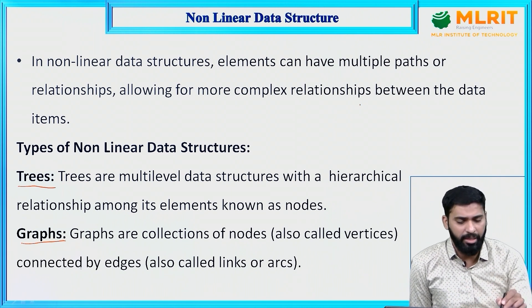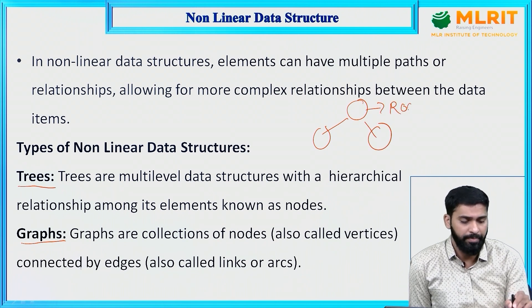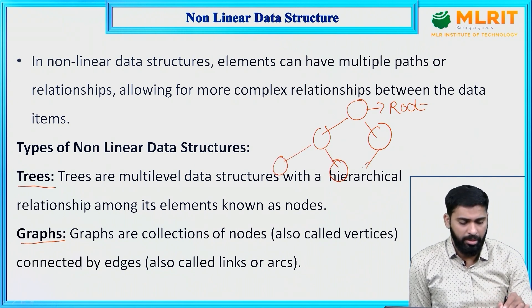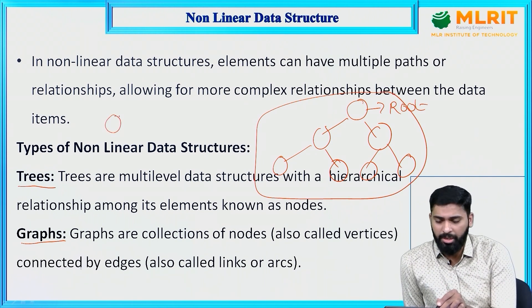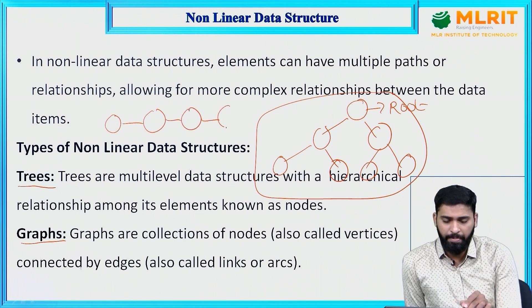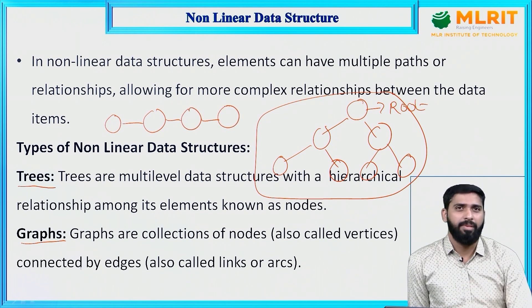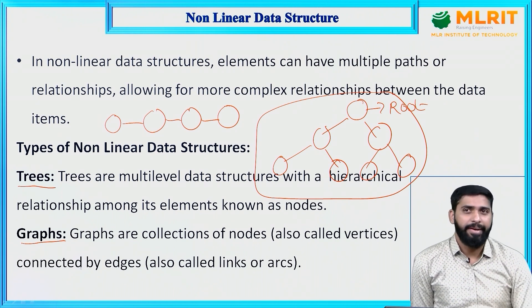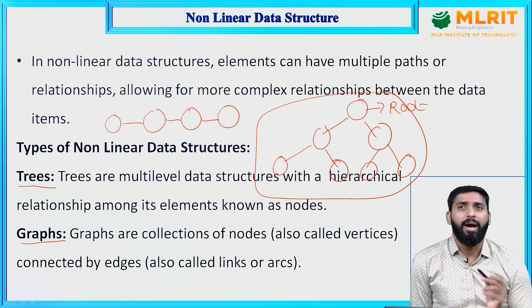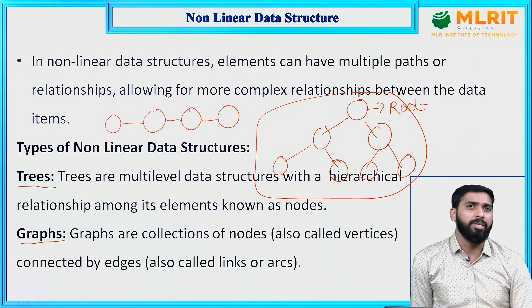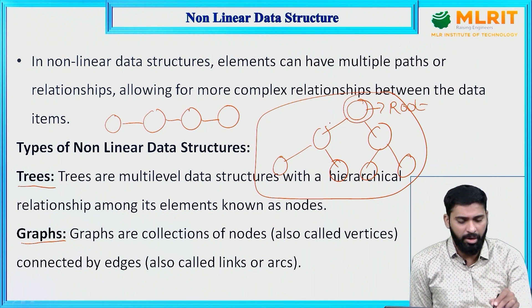What is a tree? A tree is a hierarchical data structure. It has a root node with two children, and again each child can have another two children. Trees are multi-level data structures with a hierarchical relationship among their elements, known as nodes — each one is called a node.